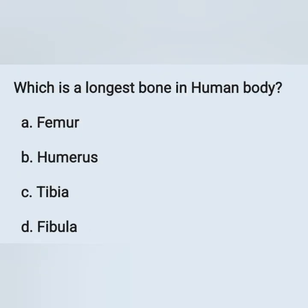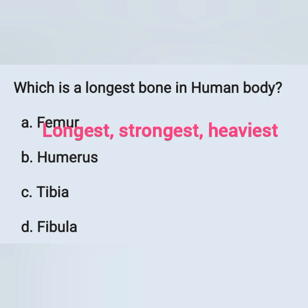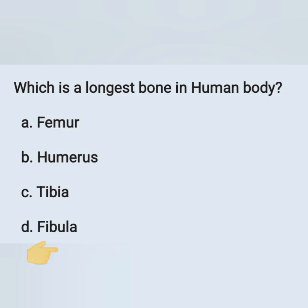Which is the longest bone in the human body? Option A: femur. Option B: humerus. Option C: tibia. Option D: fibula. The longest, strongest, and heaviest bone of the human body is the femur. Option A is the correct answer.